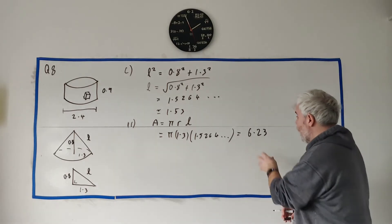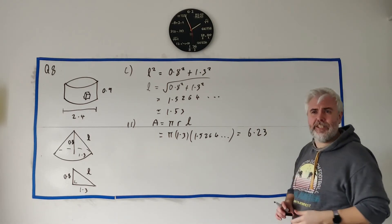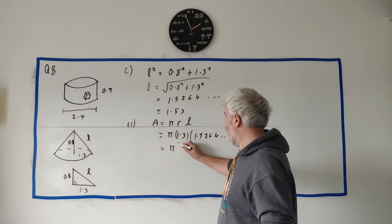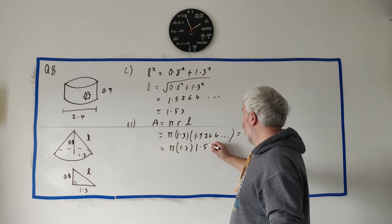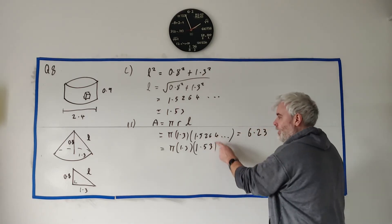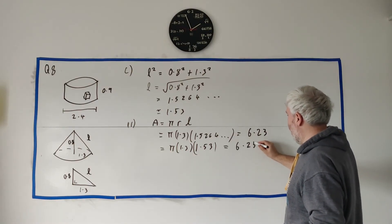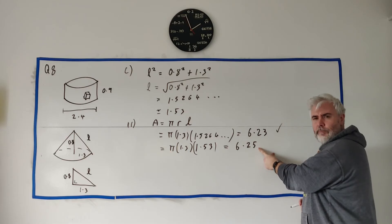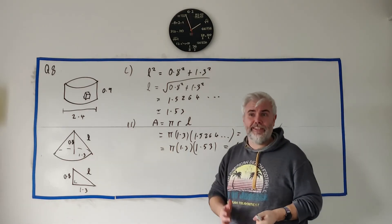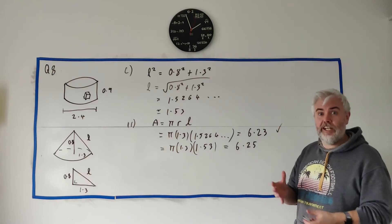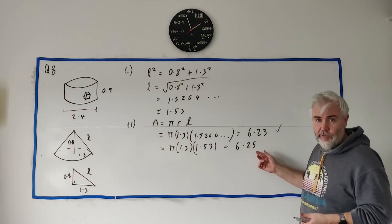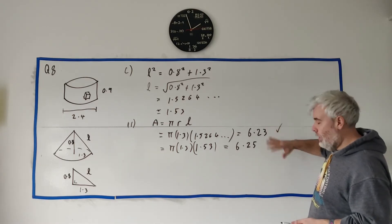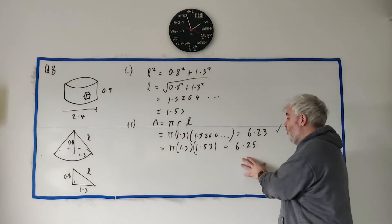You will get full marks for 6.23, but the examiner appears to have used the rounded slant height of 1.53 rather than the full decimal, giving pi times 1.3 times 1.53 equals 6.25. Although I believe 6.23 is more correct, I'll use 6.25 for the rest of the question to match the examiner's working, so my subsequent answers align with what's written in the mark scheme.